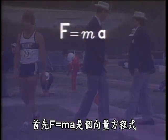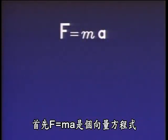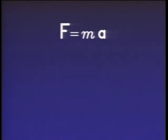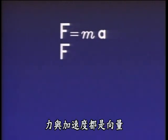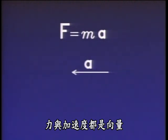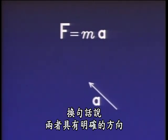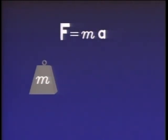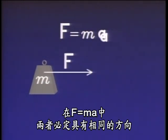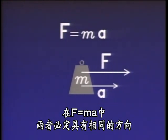First, F equals MA is a vector equation. Both force and acceleration are vectors — in other words, they have definite directions. In F equals MA, they must have the same direction.